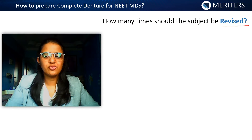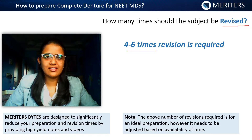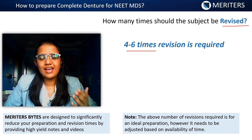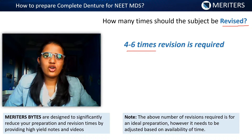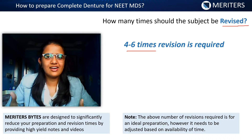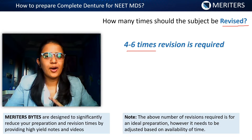How many times should this subject be revised? You can revise prosthodontics anywhere between four to six times. For example, if you complete the complete denture part within one week, then start another subject, and after a break of two to three weeks go for your second revision — which should be shorter than the first. Consecutively, when you have mock exams and grand tests, you'll frequently revise it, totaling four to six revisions from start to exam day.